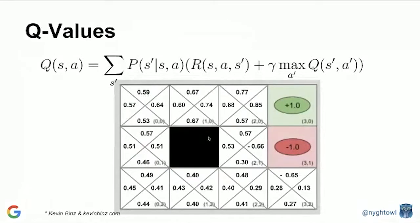There are also Q values, where you combine states with actions, getting values based on every single state and action pairing. This equation is roughly what you'll typically see when looking at anything around reinforcement learning, value function, and the Bellman equation — with some variations, but this gives you a sense of where to start. Monte Carlo is used for sampling and simulation — great when it's model-free, especially when it's hard to model your environment, and it's important that it has to be episodic.